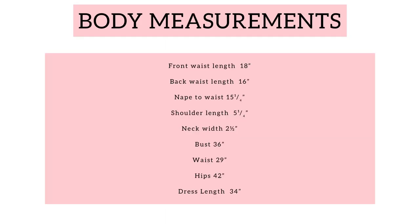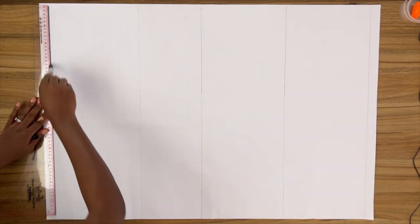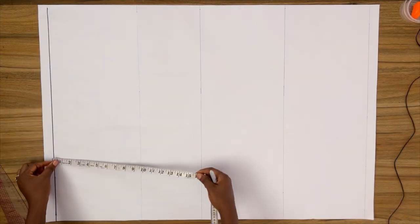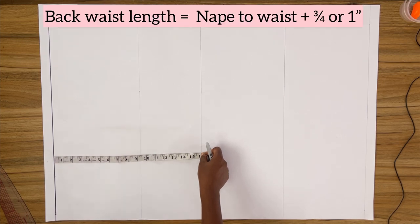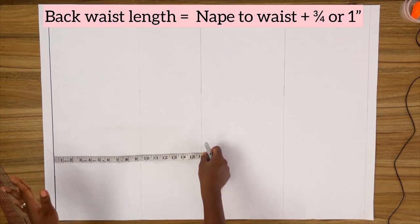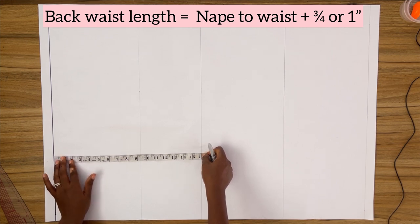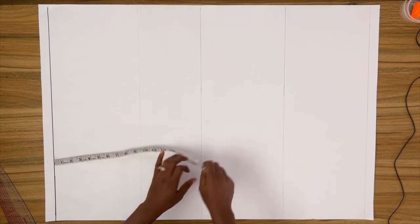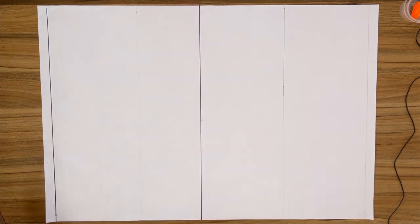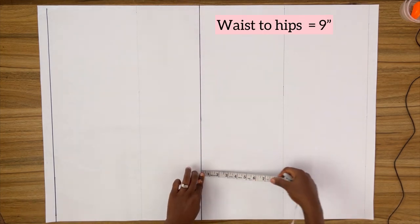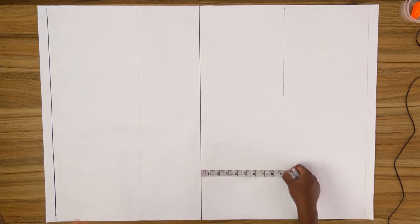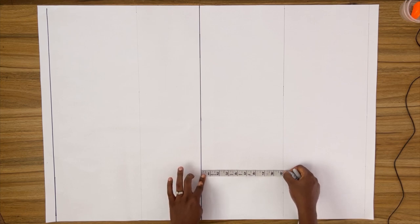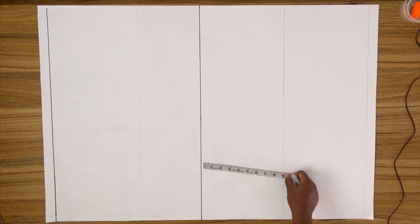Now let's start drafting. I'm going to square down a horizontal line located one inch below the top of my pattern paper. From this horizontal line, I'm going to mark my back waist length — I'm using my nape to waist measurement plus three quarter of an inch. If you are a larger size, use your nape to waist plus one inch, or just take your back waist length directly on your body. I'll mark this point and square out a horizontal line, which will be the waistline for both the front and the back. From this waistline, I'm going to mark down nine inches to get my hip line.